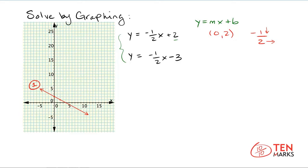Now let's work with the second equation — I'll do this one in blue. Again, the constant term represents your y-intercept. With a value of negative three, the y-intercept has the coordinates zero, negative three. Let's find that point on the graph — go down three from the origin. There's my y-intercept.